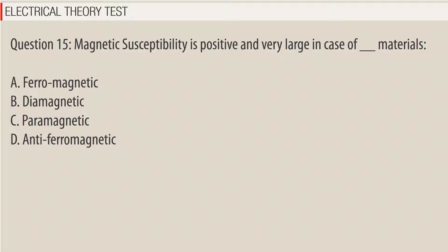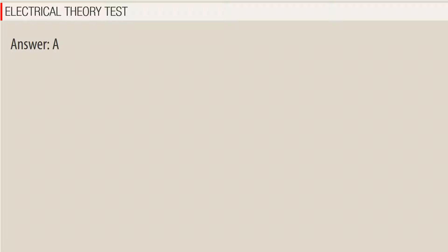Question 15. Magnetic susceptibility is positive and very large in case of which materials? a. Ferromagnetic. b. Diamagnetic. c. Paramagnetic. d. Antiferromagnetic. Answer: A.